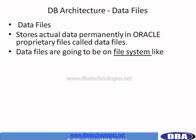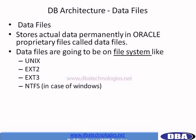Data files are the files which are going to be on a file system. File systems support files and directories. We have different types of file systems, for example Unix file systems ext2, ext3, and NTFS in case of Windows operating system. Each operating system can have its own type of file system. When we purchase a brand new hard disk, we are going to keep files and directories on that hard disk with the help of an operating system.